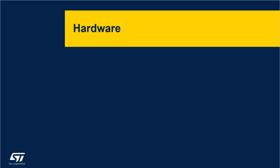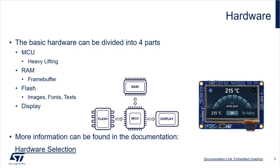Moving into the hardware part: creating an embedded graphics solution takes more than four pieces of hardware, but from our point of view there are four critical components necessary for embedded graphics. Of course there will be a lot more hardware involved, but these are the four key components: the MCU, the RAM, the flash, and the display.